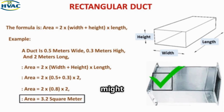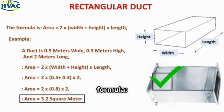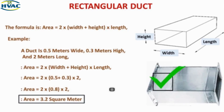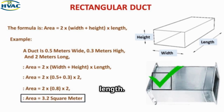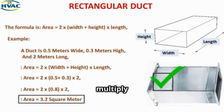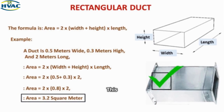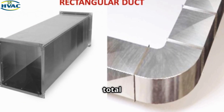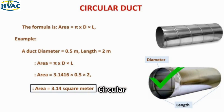0.3 meters high, and 2 meters long — these are common dimensions in a typical HVAC system. Using the formula: area = 2 × (width + height) × length, we get area = 2 × (0.5 + 0.3) × 2 = 3.2 square meters. This represents the total surface area of the rectangular duct.